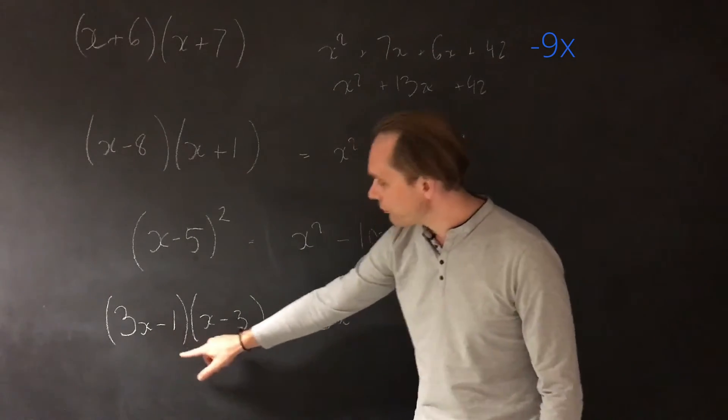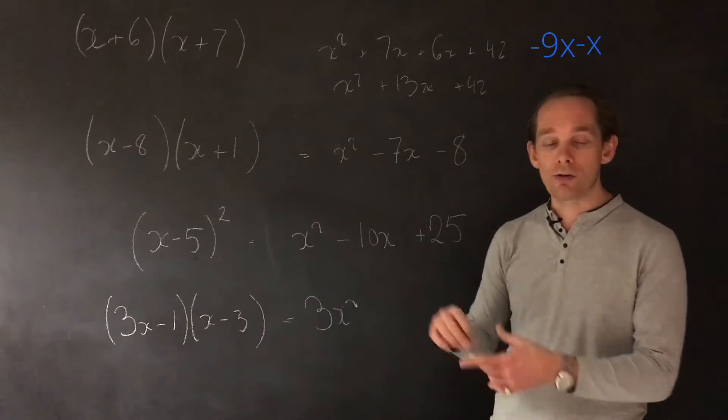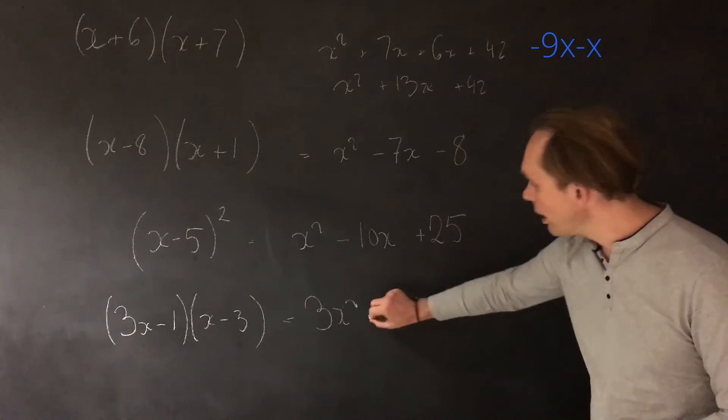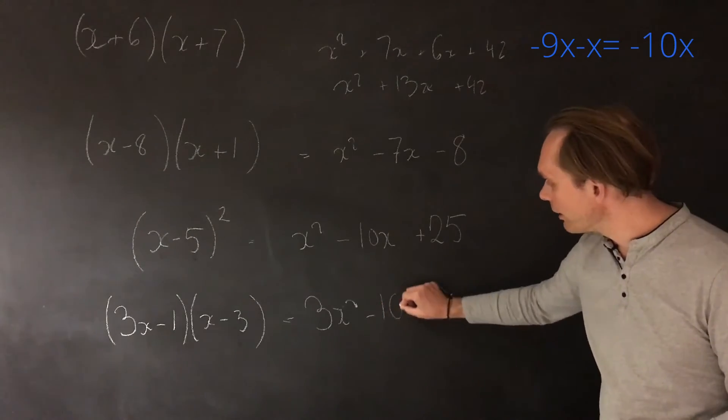And then minus 1 times x is minus 1x. So minus 9 and minus 1 makes minus 10, and you're going to get minus 10x.